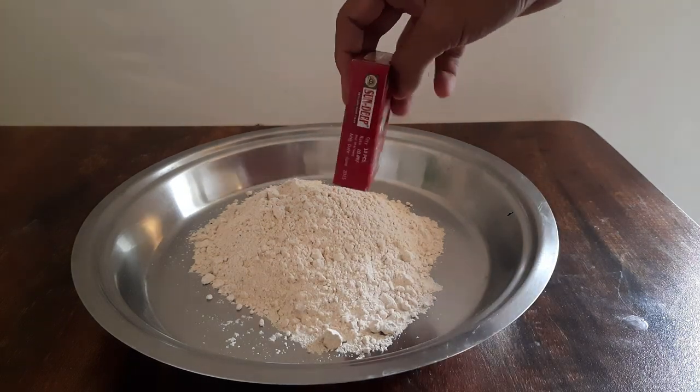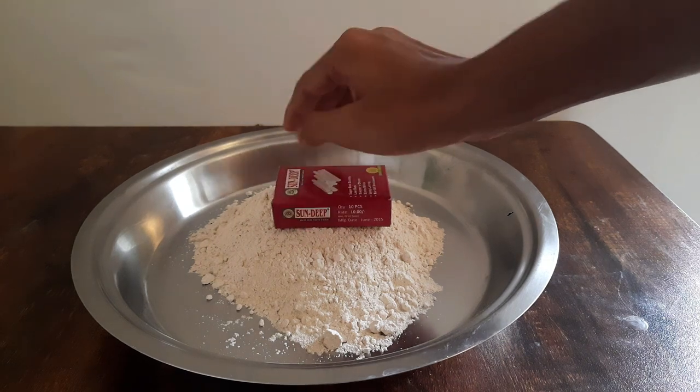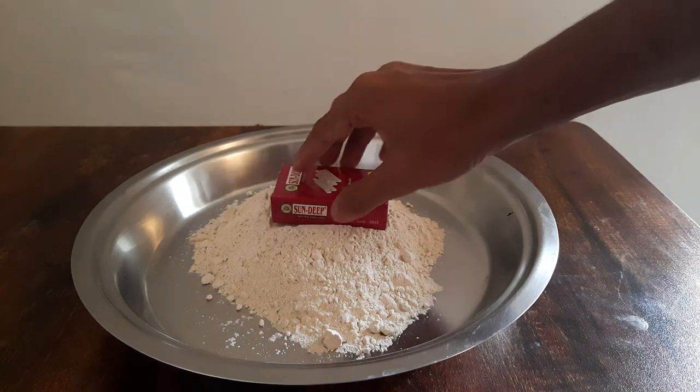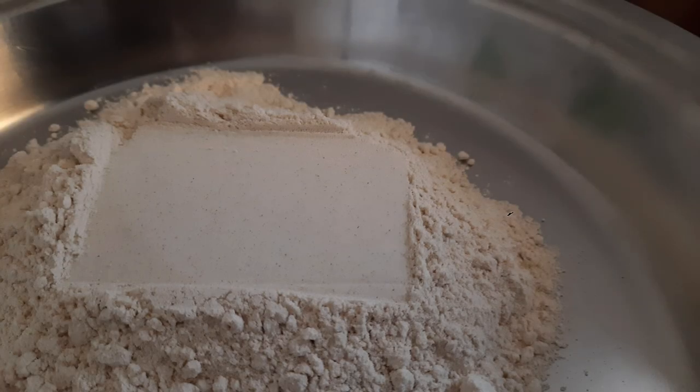So for this activity, I have some flour and this box with some chalks in it. I will place the box like this horizontally, and when I do that, I see that it has left a mark on the flour and there is this much depth to the mark.